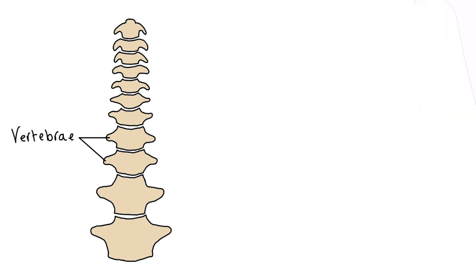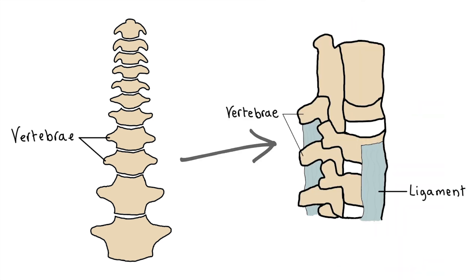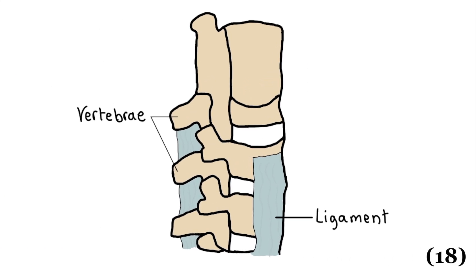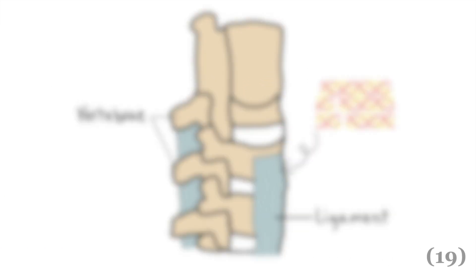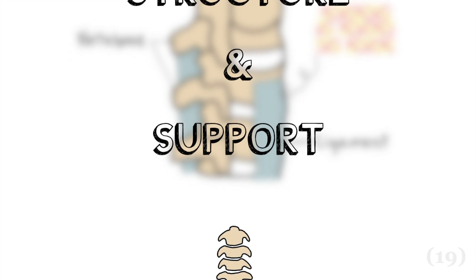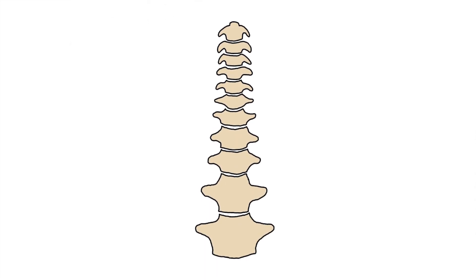Last but not least, how does Ehlers-Danlos syndrome cause scoliosis? Let's start by looking at the spine structure. The spine consists of vertebrae connected to each other by fibrous connective tissue called ligaments. Ligaments are composed of collagen fibrils. These tissues structure and support the spine. The spine is our backbone, no pun intended. It withstands the forces of gravity and the weight of our body.